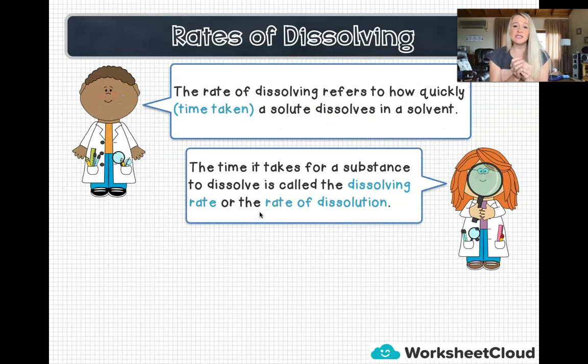The time taken for a substance to dissolve is called the dissolving rate or another term is the rate of dissolution. Usually if we want to look at the rates of dissolving, we would have a timer to time when all the particles of that solute are completely dissolved. The time that it took for all the particles to completely disappear and evenly disperse themselves within the solvent is the rate of dissolving.